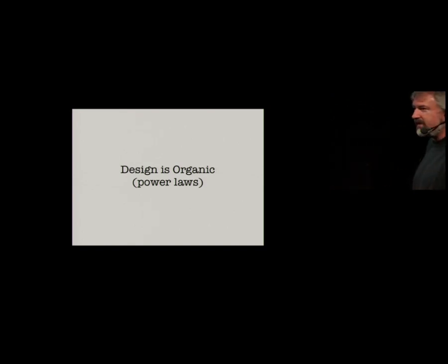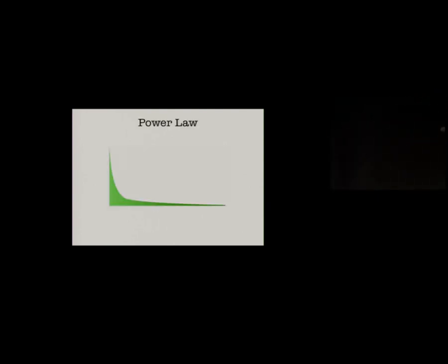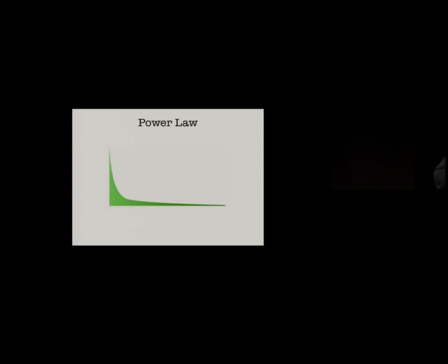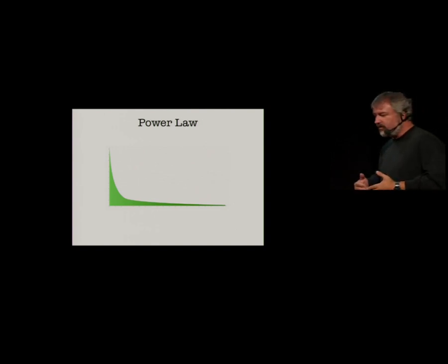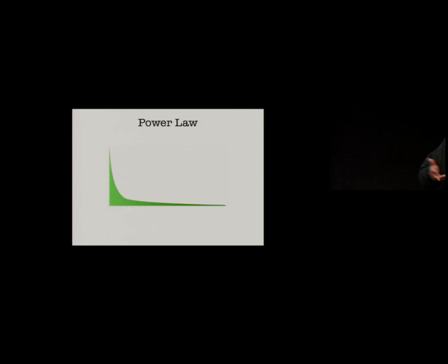Power law distributions — you've heard about these? They're getting more and more play now within the development community. You can see power laws in many different natural phenomena. Here's a power law distribution — like, for instance, taking a look at airports. Usually there are a small number of airports which receive many, many incoming flights. And there are lots of little satellite airports which don't really have much in the way of incoming and outgoing flights. People tend to bias towards flying towards the hubs — because you can get someplace else from the hubs.